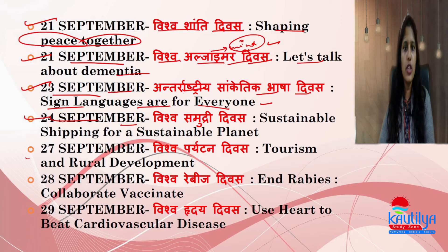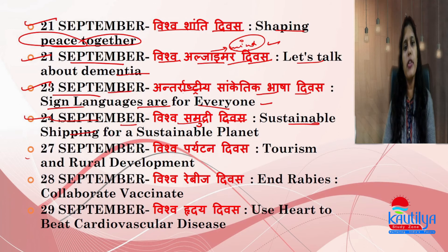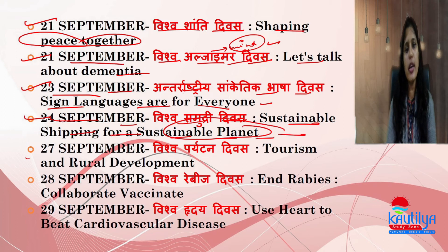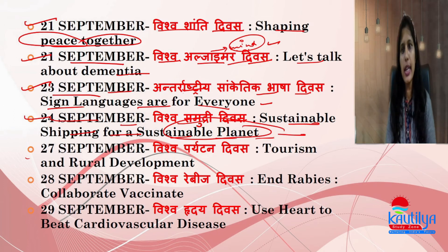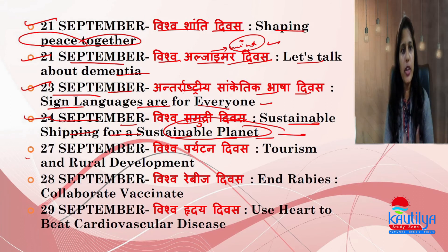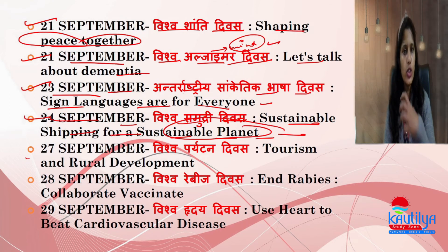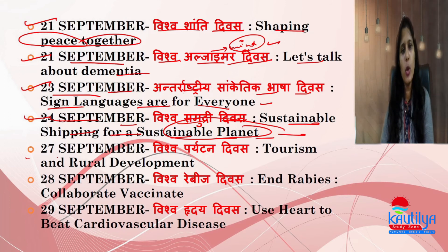24th September is World Maritime Day. The theme is 'Sustainable Shipping for a Sustainable Planet,' meaning we must use the shipping system sustainably to protect our oceans from pollution and safeguard the planet.